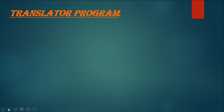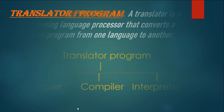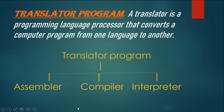Translator program. A translator is a programming language processor that converts a computer program from one language to another. Translator program is divided into three parts: Assembler, Compiler, and Interpreter.